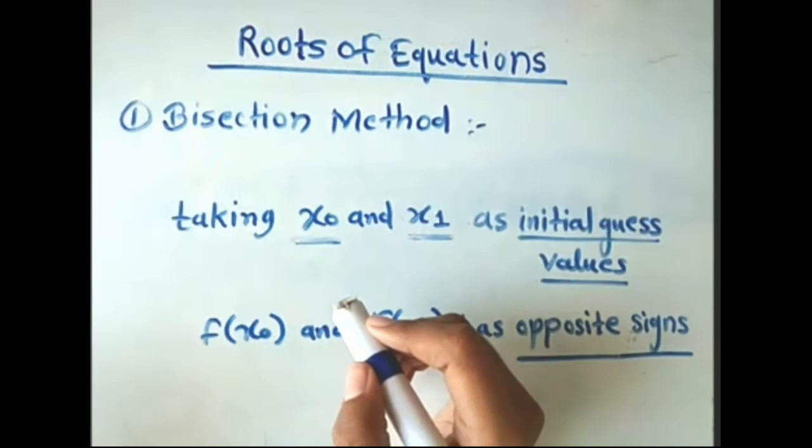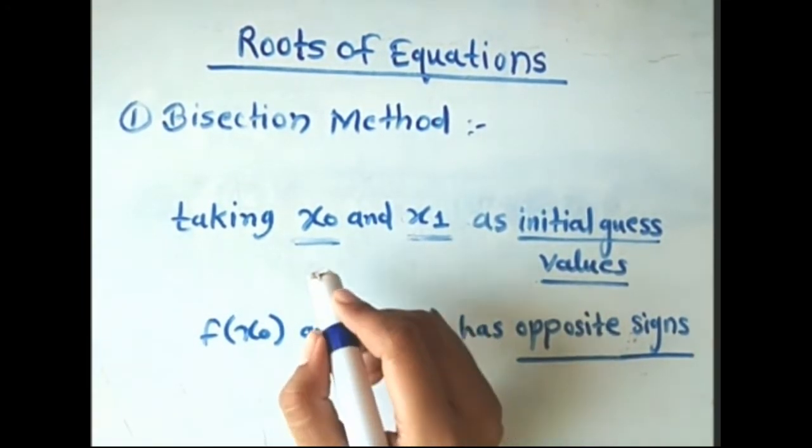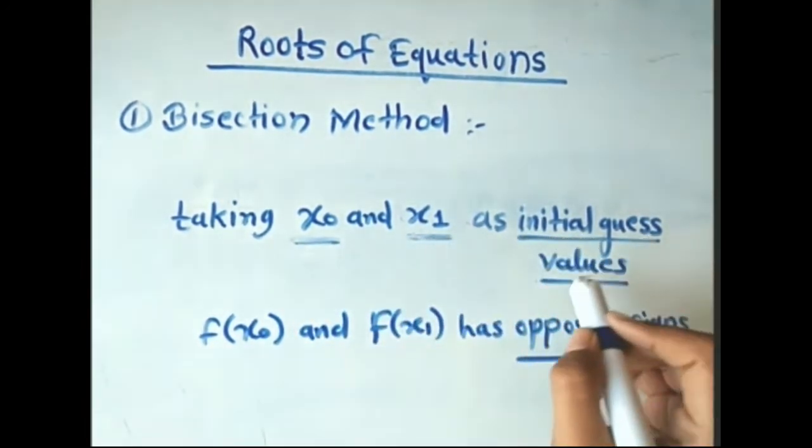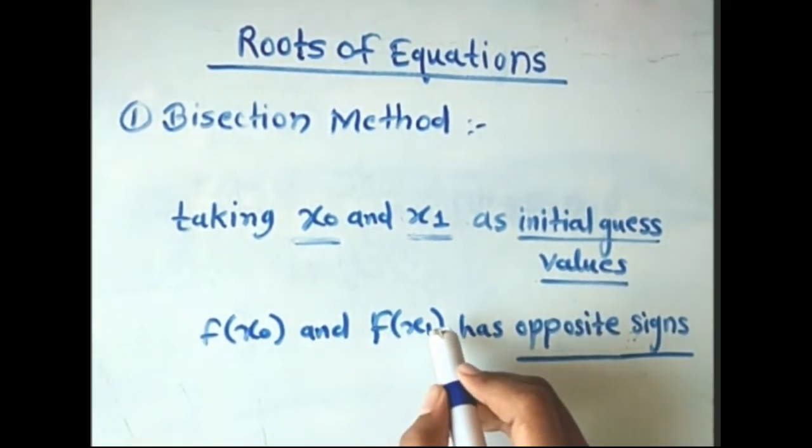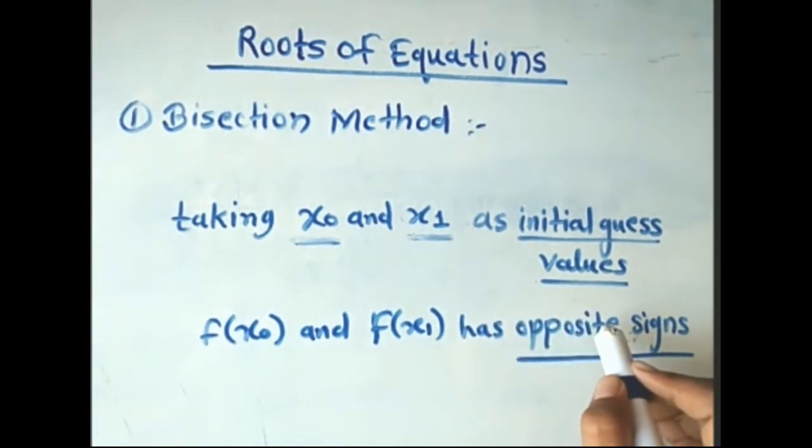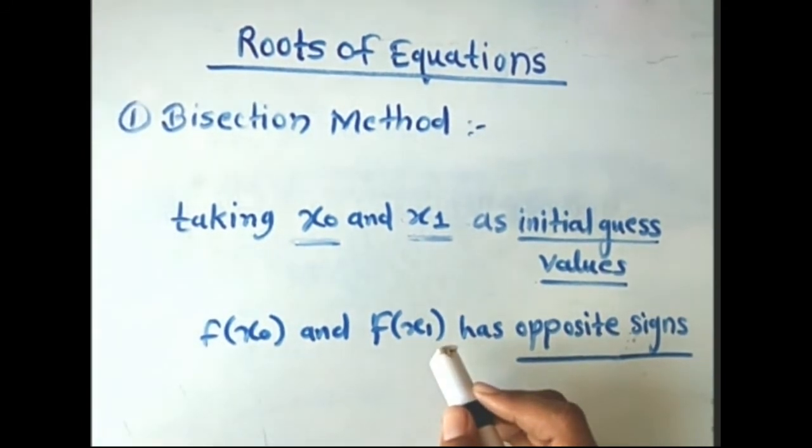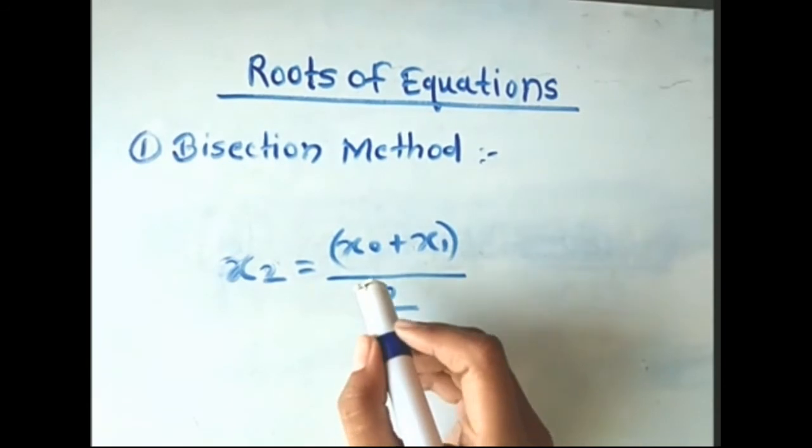The iterative process for finding the root of equation f(x) = 0 starts by taking x₀ and x₁ as initial guess values of the root, where f(x₀) and f(x₁) have opposite signs. We find a middle value, that is the bisecting interval, using the formula x₂ = (x₀ + x₁)/2.